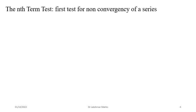One simplest test is the Nth term test. It is really interesting in the sense that it is not good for establishing convergency of a series, but it is very good for divergency of a series. That means if you are checking the Nth term and suppose that Nth term is not converging to 0, then you can claim that the corresponding series would be divergent. Otherwise, if the Nth term is converging to 0, you can't say anything about convergence of the series.